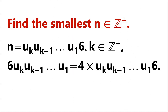Find the smallest natural number n which has the following properties. (a) Its decimal representation has 6 as the last digit. (b) If the last digit 6 is erased and placed in front of the remaining digits, the resulting number is 4 times as large as the original number n.